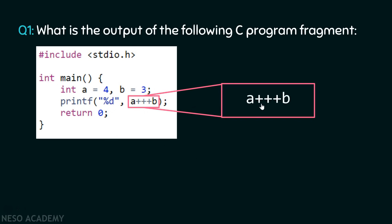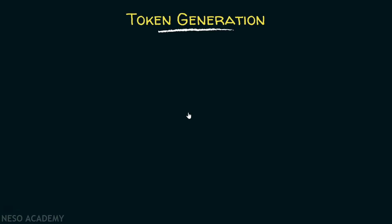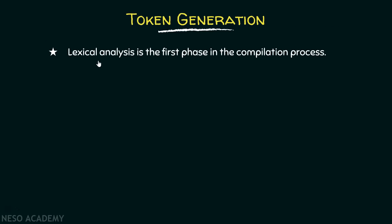In order to understand the statement a plus plus plus b and what it really does, we need to understand one concept: token generation. Lexical analysis is the first phase in the compilation process. In the compilation process, there are a lot of phases. The first phase is lexical analysis, then we have syntax analysis and semantic analysis. Lexical analysis is performed by the lexical analyzer.